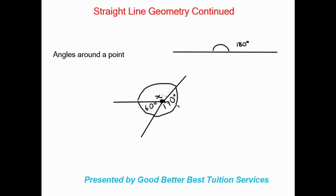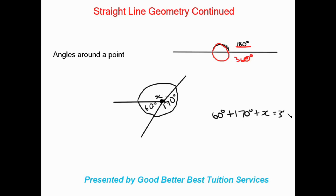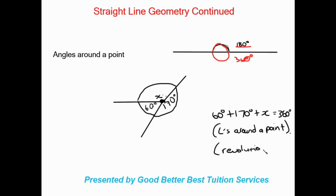A circle angle is 360 degrees. I got half a circle on my straight line which gave me 180 degrees, so if I add another half circle it gives me a whole circle, which would give me 360 degrees. So looking at this, if I wanted to work it out: 60 degrees plus 170 degrees plus x is equal to 360 degrees. The reason for this is angles around a point, or you could say a revolution — that's another way of saying it's a circle, equal to 360 degrees.